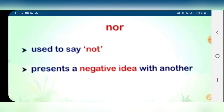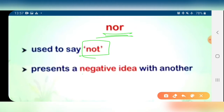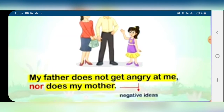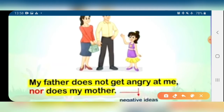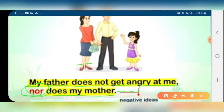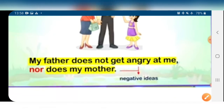Next is 'nor'. 'Nor' is used to say 'not' — it is a negative form that presents a negative idea with another. For example: 'My father does not get angry with me, nor does my mother.' Both are negative ideas, so we have joined them with N-O-R, 'nor'.